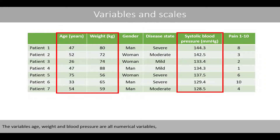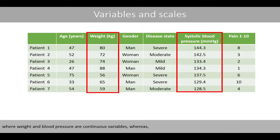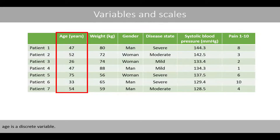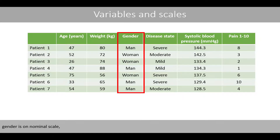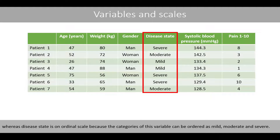The variables age, weight, and blood pressure are numerical variables, where weight and blood pressure are continuous variables, whereas age is a discrete variable. Gender and disease state are categorical variables, while gender is on a nominal scale, whereas disease state is on an ordinal scale because the categories of this variable can be ordered as mild, moderate, and severe.